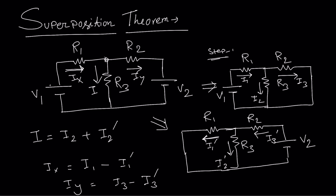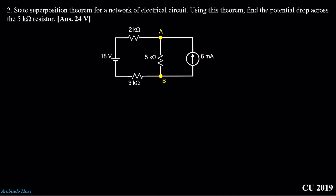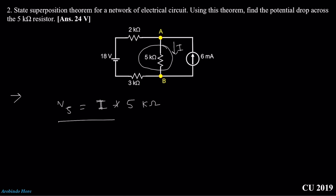Now let's go to the problem. We need to solve a problem from CU 2019 — this is a Calcutta University previous year question. They ask us to state and verify the superposition theorem for the following electrical network, and using this theorem, find the potential drop across the 5 kilo ohm resistance. In this circuit we have two independent sources: one 18 volt voltage source and one 6 milliampere current source.